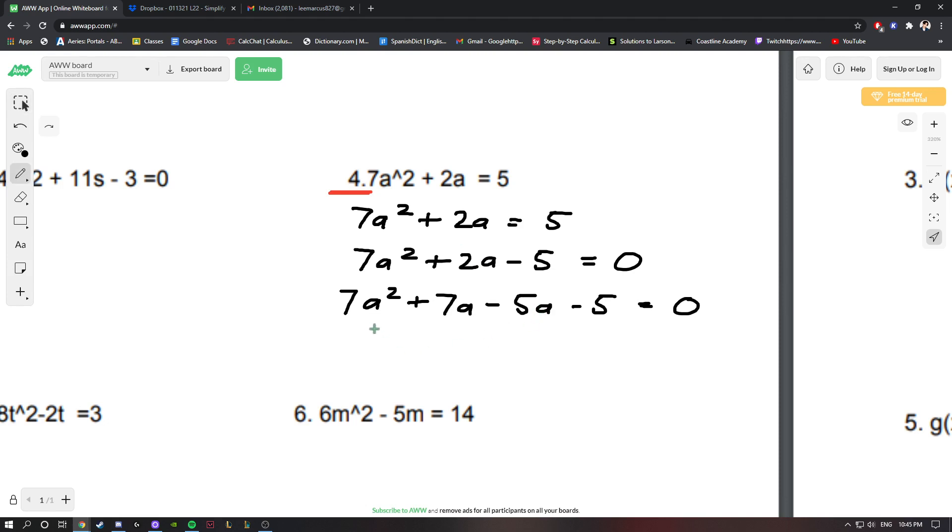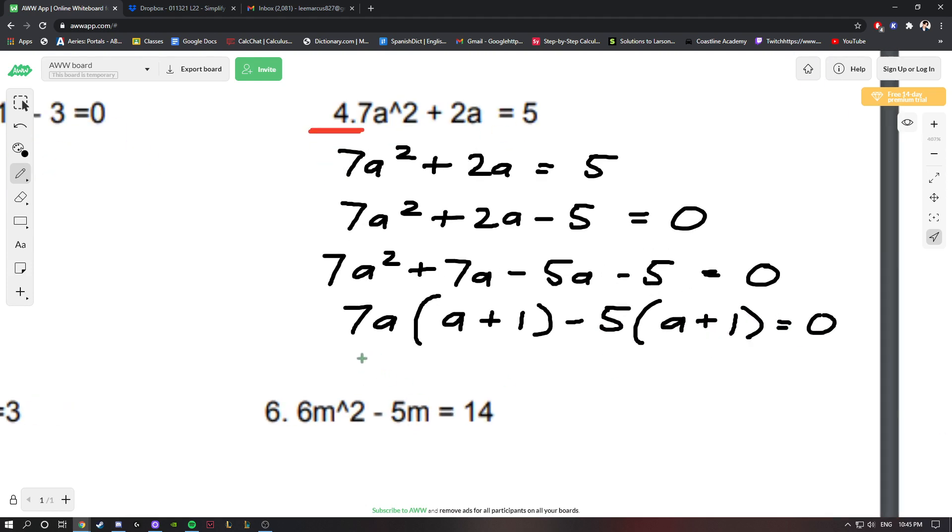This way I could factor by grouping, in which I factor out a 7a and I'm left with (a + 1) in these two terms. In these two terms, I factor out a -5 and I'm left with (a + 1) as well. At the end, we get these common factors we keep as 1, so we're left with (7a - 5)(a + 1) = 0.